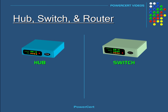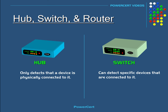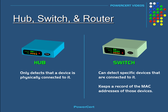So as a review, a hub only detects that a device is physically connected to it. And a switch can detect specific devices that are connected to it, because it keeps a record of the MAC addresses of those devices.